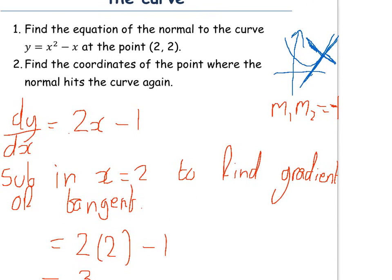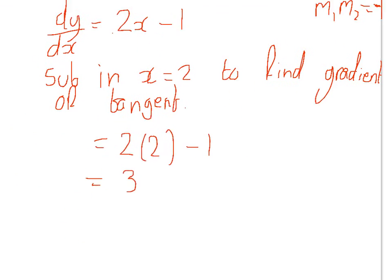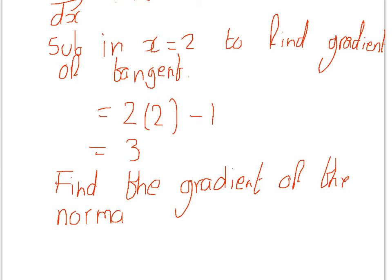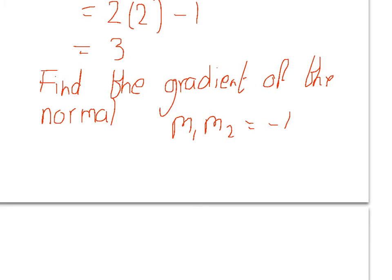Remember what I said a minute ago, that the normal is the line perpendicular to this. So we know the gradient of this line. If we put it through this equation, m1 times m2 equals minus 1, we should be able to find the gradient of the normal line. So let's find the gradient of the normal. So 3 times m2 equals minus 1, so m2 equals minus 1 over 3. That is the gradient of the normal.